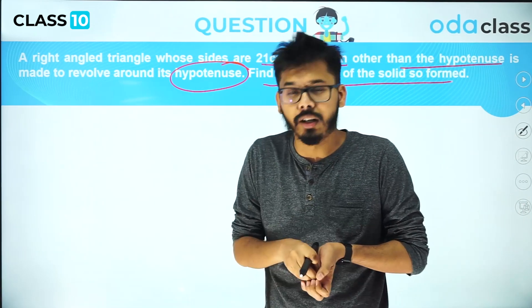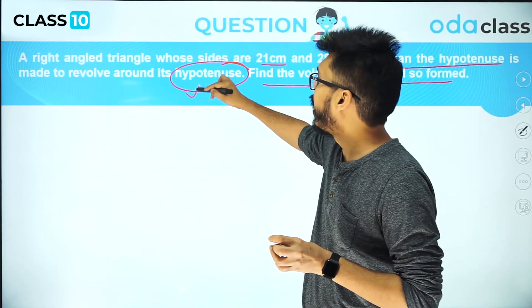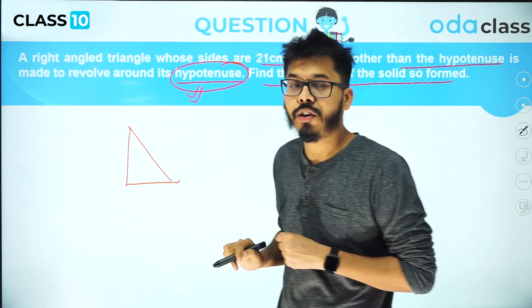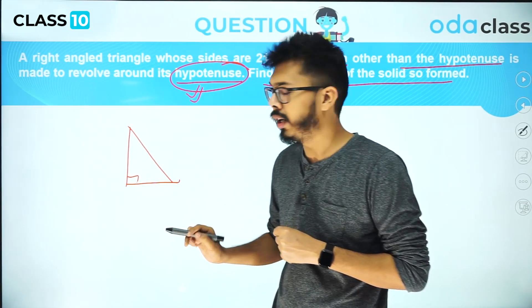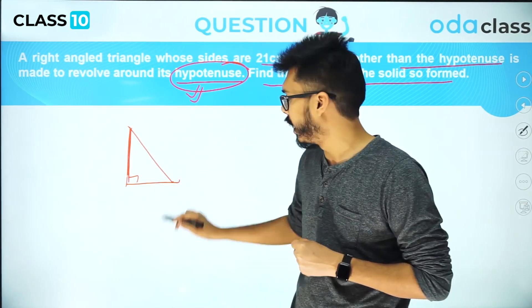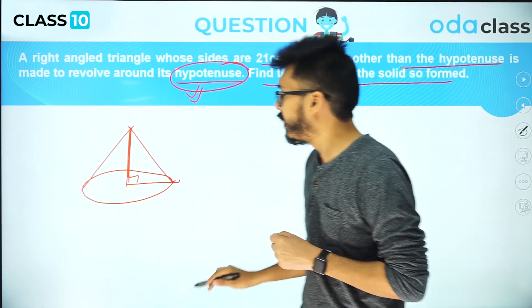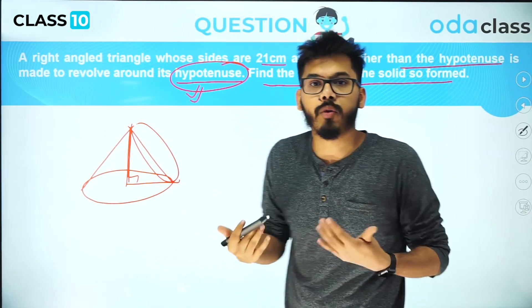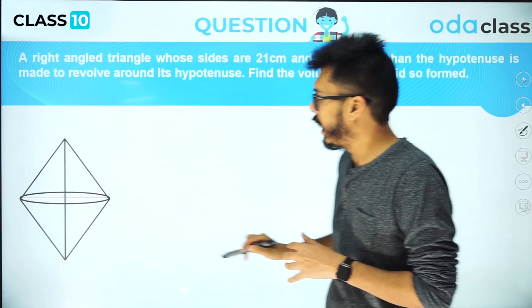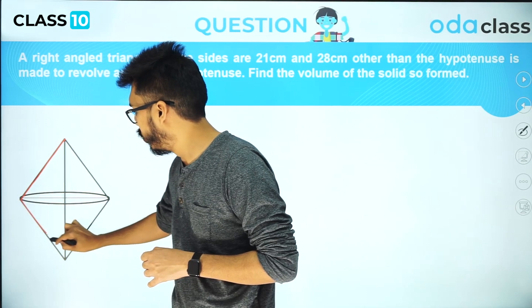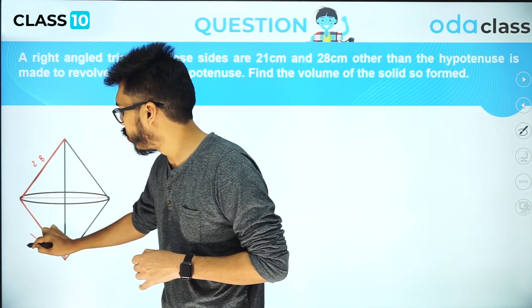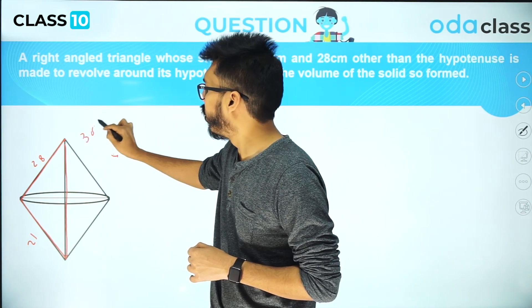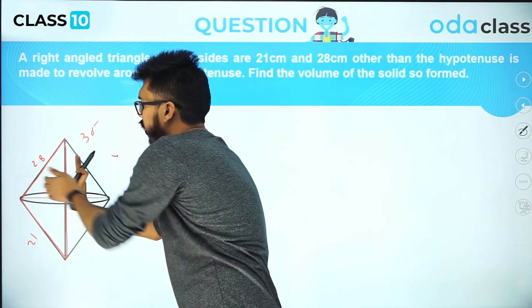This problem is little bit twisted because the side around which the whole triangle is being revolved is the hypotenuse. Usually when you talk about right circular cone, you get a triangle at right angle and then you revolve this triangle along one perpendicular side to get the cone. But here we are revolving the whole thing with respect to the hypotenuse. Let's understand what the figure will be. We have the perpendicular sides as these two: this I can take as 28, this as 21, and the hypotenuse is 35.